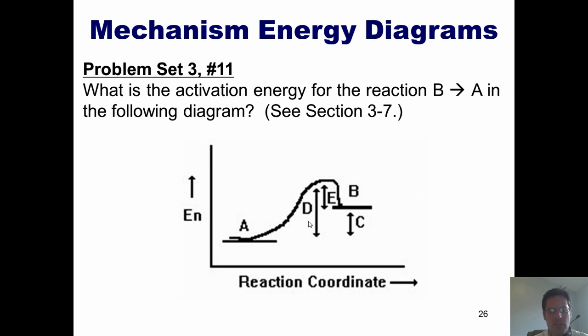What is the activation energy for the reaction of B to A in the following diagram? Now, this is interesting because this particular question is asking, how much energy is required to go backwards from B to A? You'll note that going from A to B, I have to go up this hill that in height is D. So D would be the activation energy required to go in the forward direction. But what about going in the reverse?